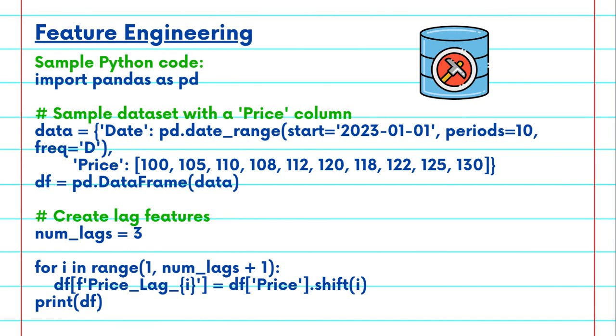Feature engineering. To enhance your analysis and prediction models, you can create additional features from your time series data through feature engineering. Let's say you want to predict future stock prices. You can create lag features by adding columns with past stock prices. For example, you might add a column for the stock price one day ago, two days ago, and so on. These lag features help your model capture dependencies on past prices.